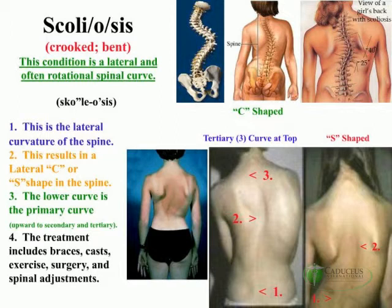In many individuals, it is the ileum rotating anteriorly forward or posteriorly backwards as it articulates with the sacrum, causing the leg length to shorten or lengthen a quarter inch to an inch or more. The shortening of the leg causes the body to tilt in that direction. The brain says if you're tilted in that direction, you need to get the brain over the center of gravity, and so the head, spine, and upper body move in the opposite direction. As a result, you get your primary curve.